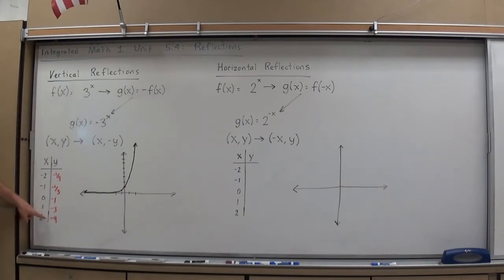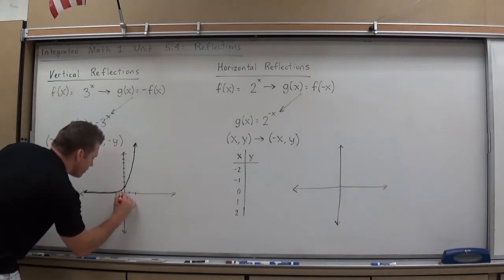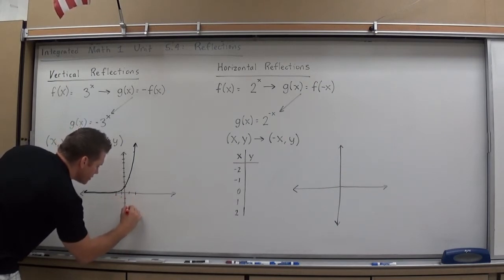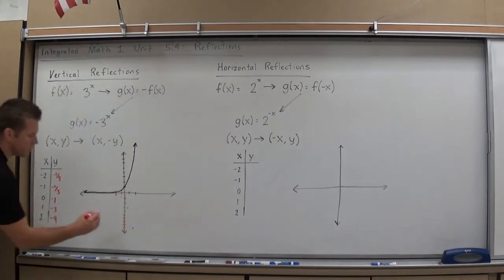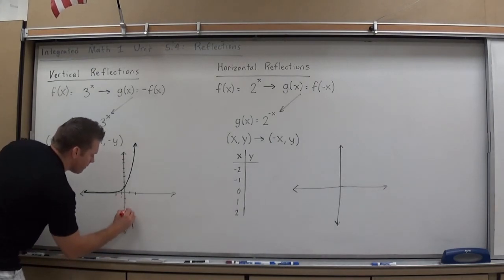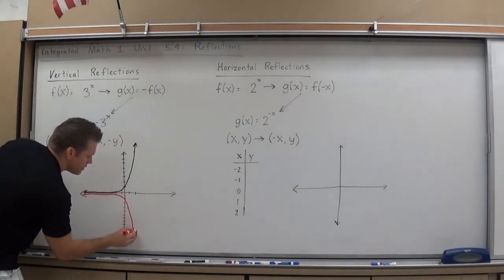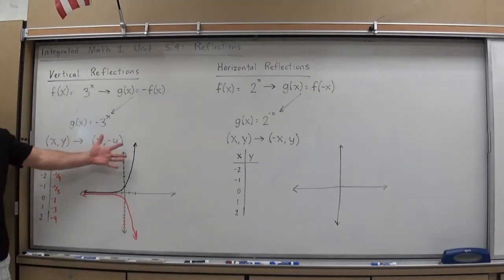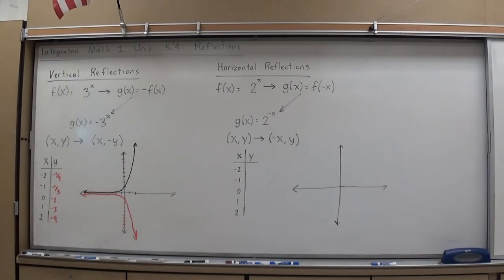So if I graph these points, negative 2 and 1 ninth, negative 1 and 1 third, 3 and 9, I get an exponential function again. Only this time it's an exact reflection vertically of the original. This was 3 to the x. Negative 3 to the x is a vertical reflection over that axis of the same function.